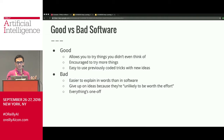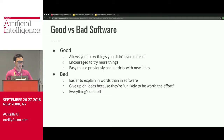AlexNet, the 2012 ImageNet winner, combined tricks that already existed: convnets, depth, GPUs, and dropout — and basically changed the entire field. AlphaGo is the same: the ideas are pretty basic from a standard RL class, but combining them all together was actually quite non-trivial. I think this combination space is underexplored, and good software would help us explore it.